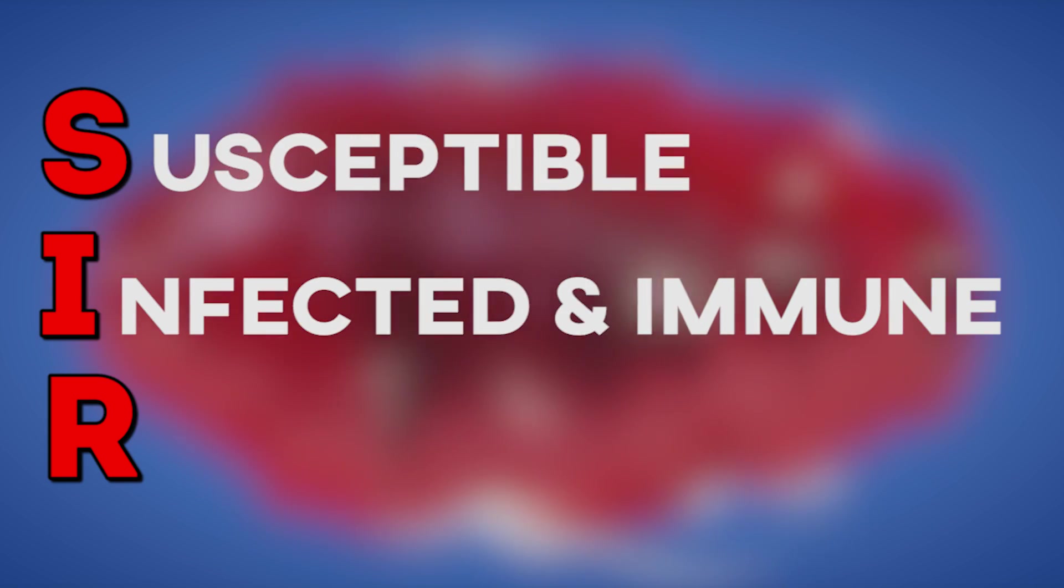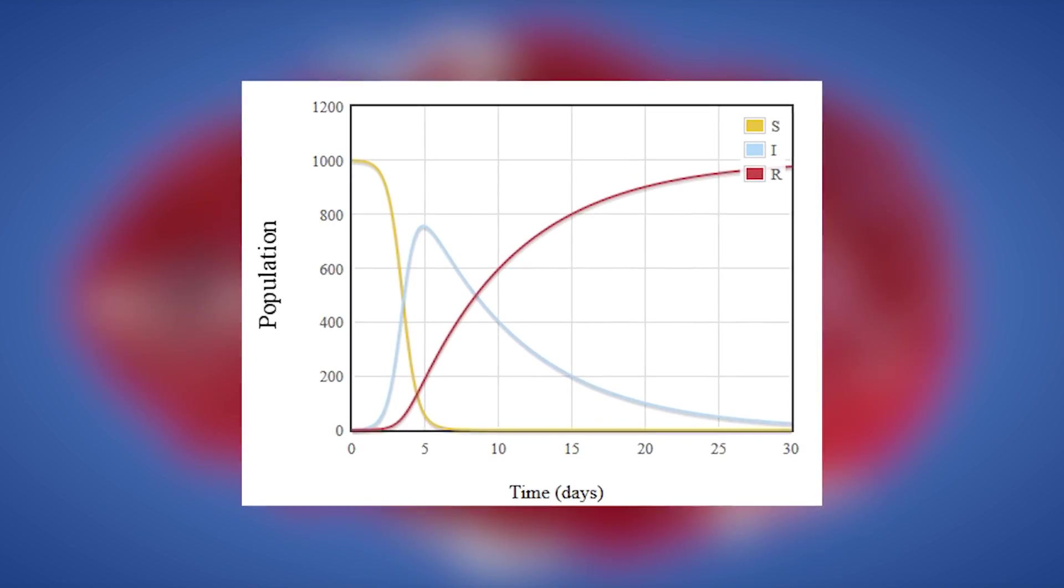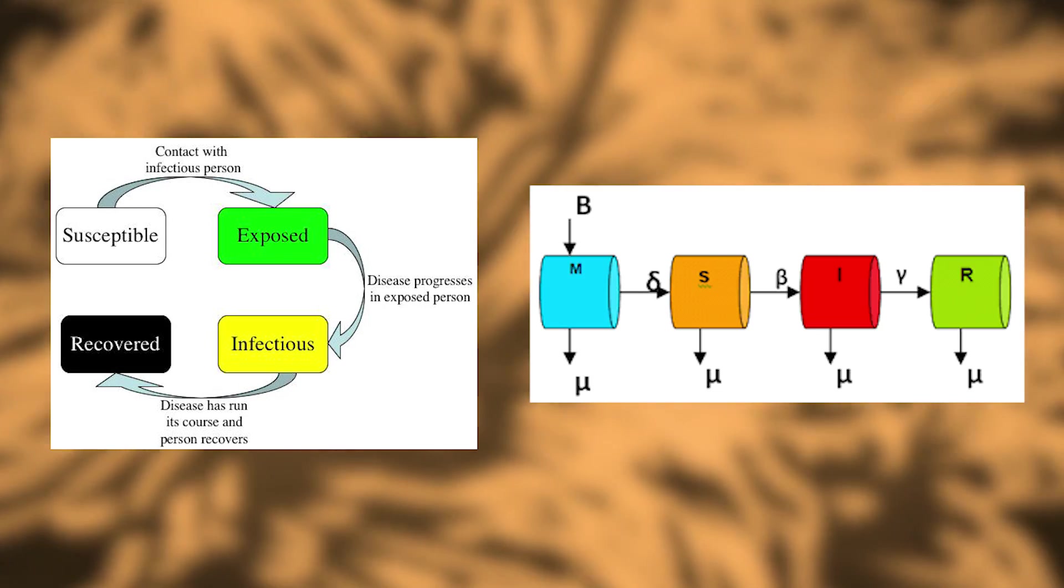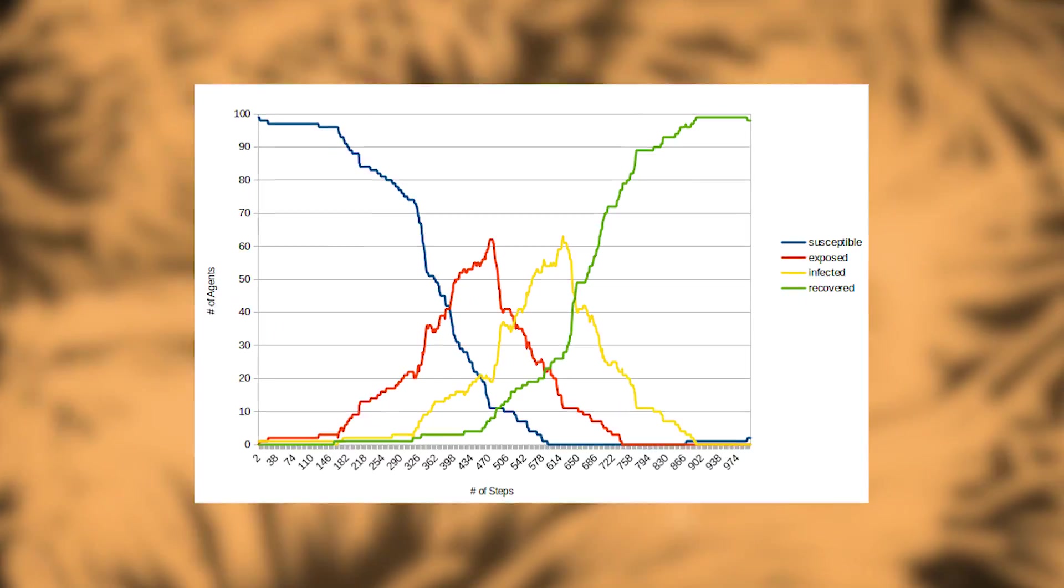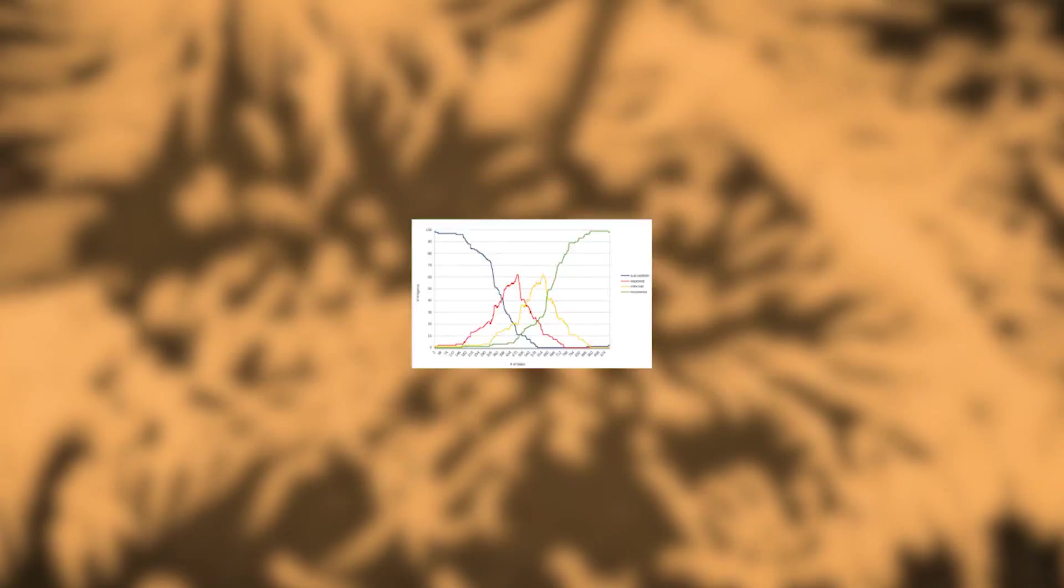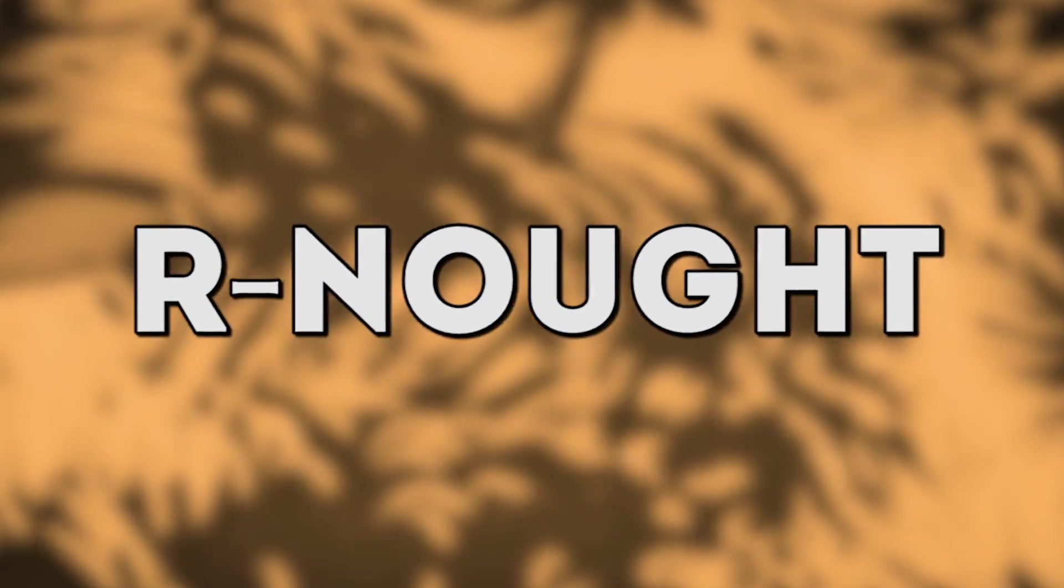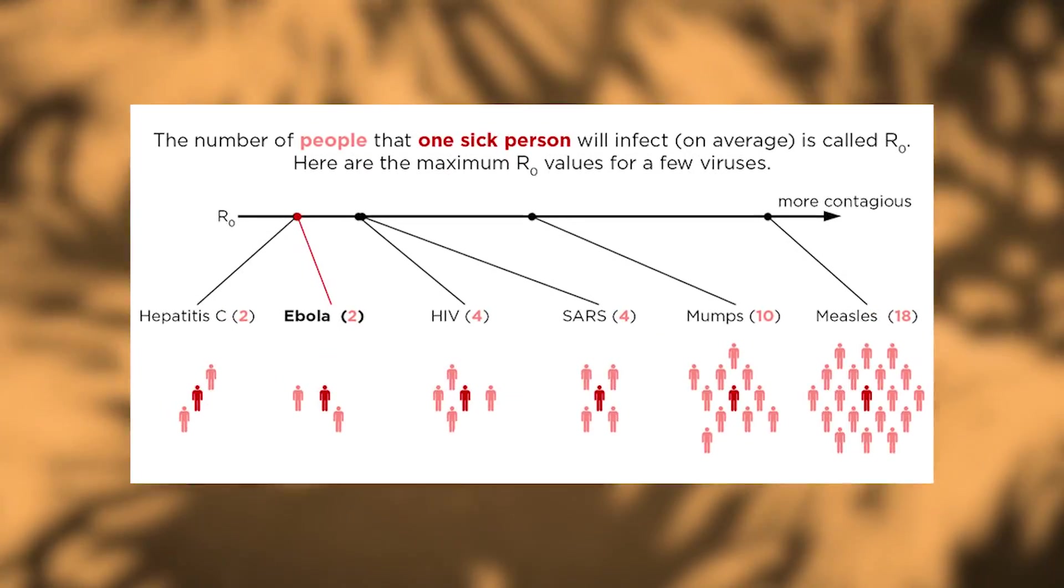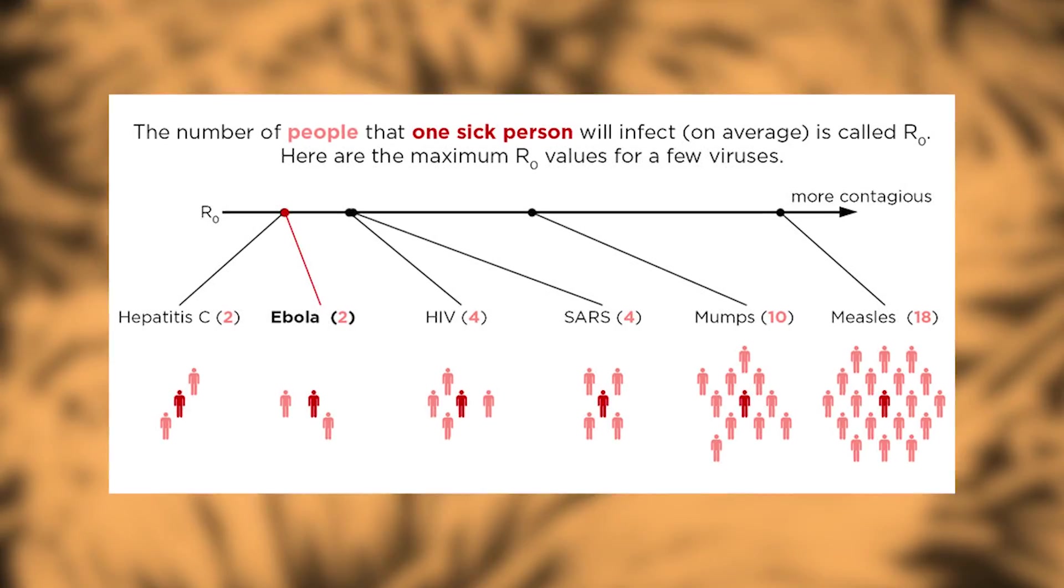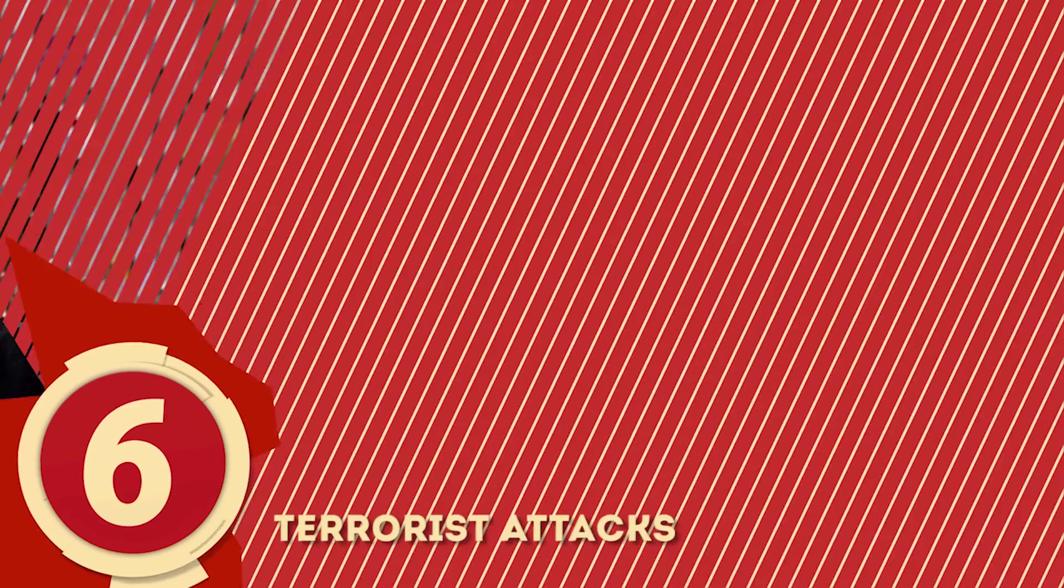SIR, which accounts for those susceptible, those infected and immune, and those recovered, isn't the only model used in epidemiology. The SEIR and MSIR models include additional facts such as the population exposed to the disease and population born with an immunity, while the SIS model removes the immune group altogether. An additional factor, known as R-naught, represents the reproduction number of the disease or the number of people an infected individual can spread the disease to before becoming non-infectious.